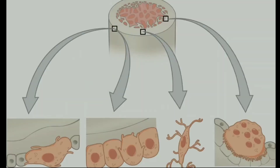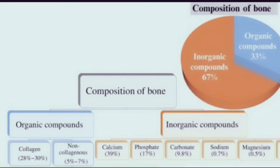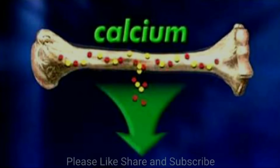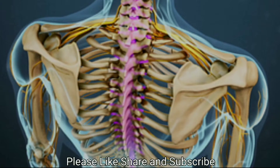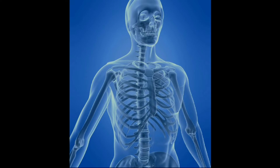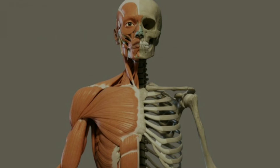Bones are composed of two main constituents. Bone cells are biotic, while calcium carbonate, calcium phosphate, minerals and salts are the abiotic constituents of bones. Calcium imparts strength to the bones. The skeletal system gives a definite shape to the body, provides support, and protects the delicate organs inside the body.